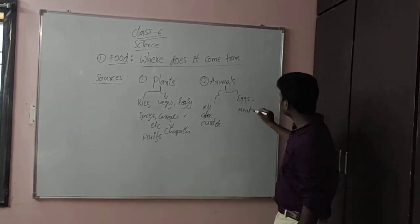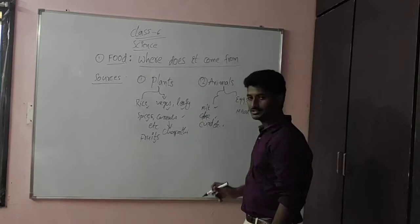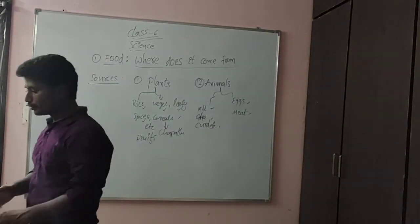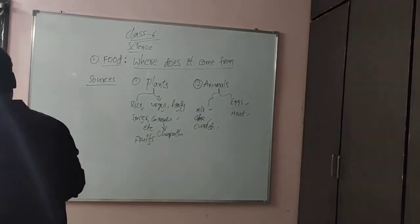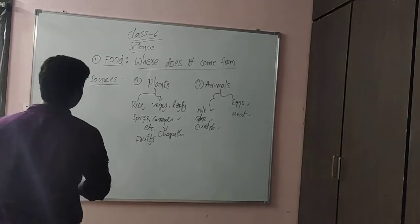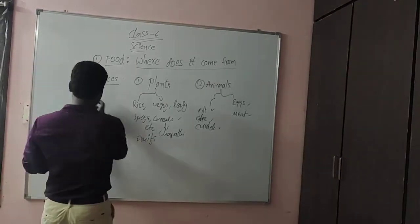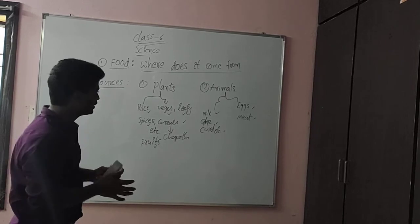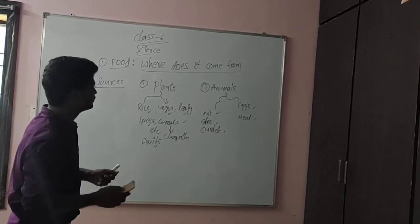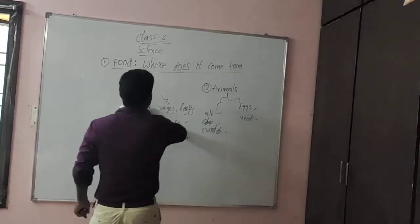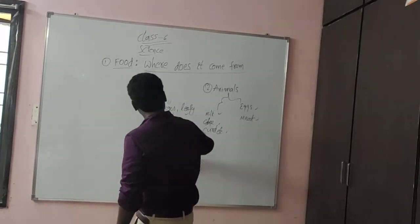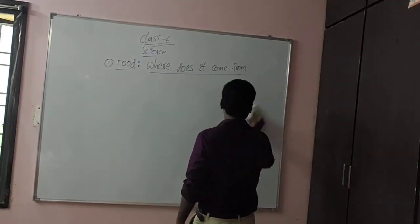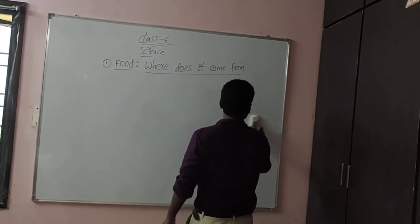From animals, we get eggs and meat, milk, ghee, curd, etc. So what are the parts of the plants we eat every day? These two — plants and animals — are the sources from where we get food. Now let's talk about which parts of the plant we get food from.